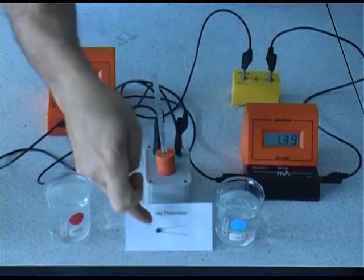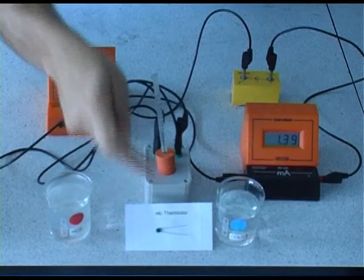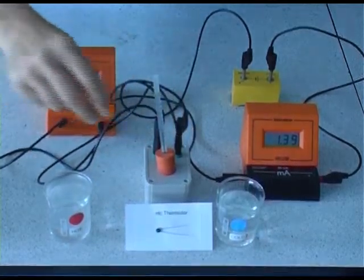Inside this little pot is a negative temperature coefficient thermistor. What we're going to do is change the temperature using hot and cold water.